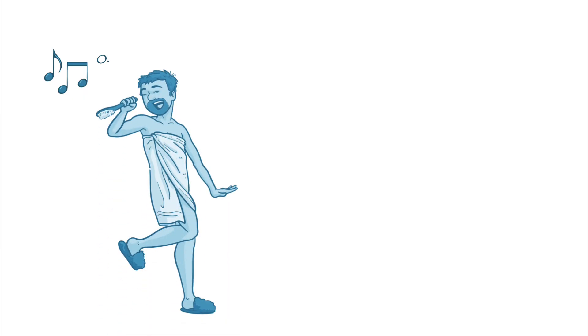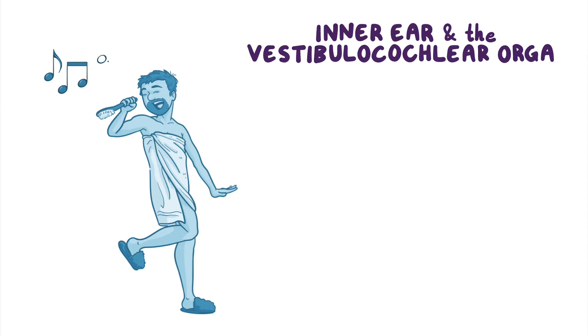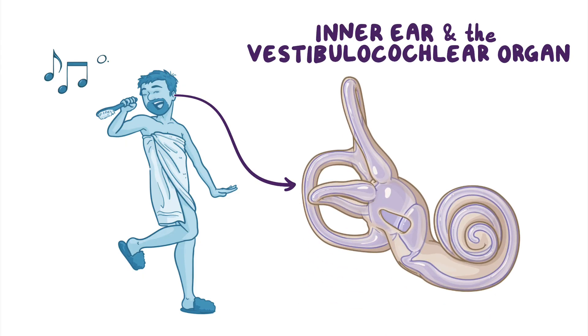Well, there's a little thing called the inner ear that contains the vestibulo-cochlear organ, which gives you the ability to perceive sounds and maintain your balance.